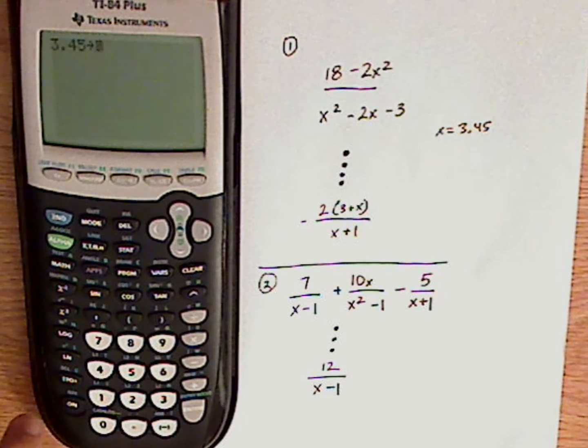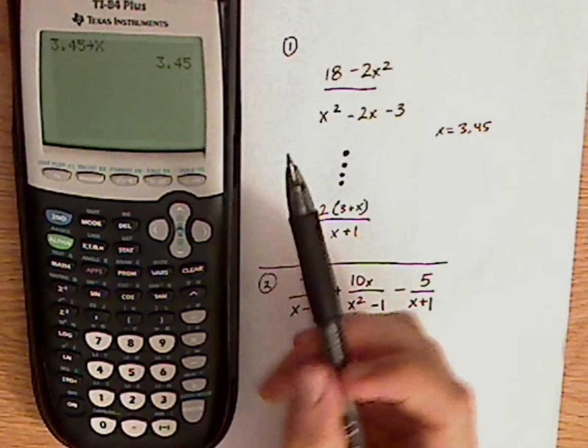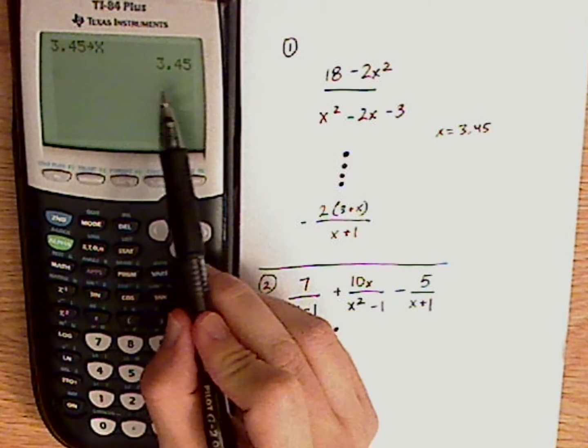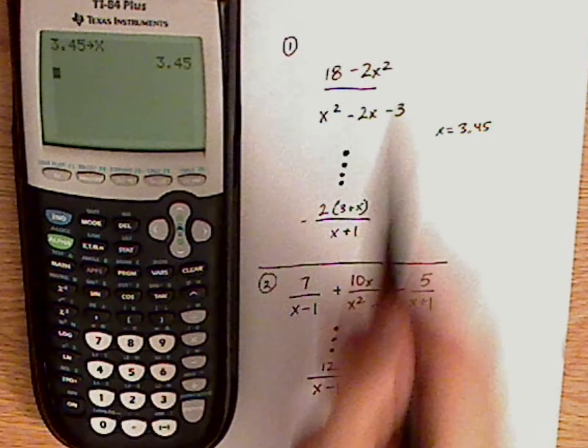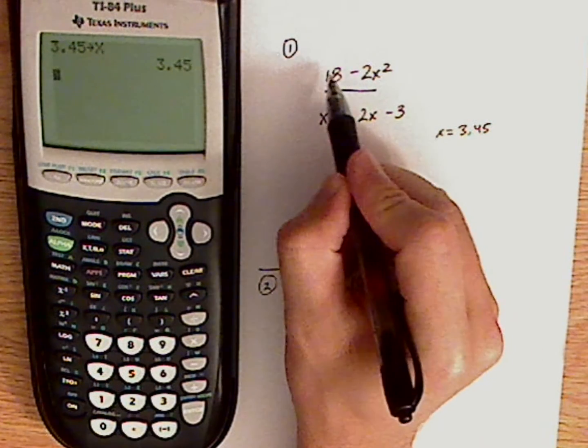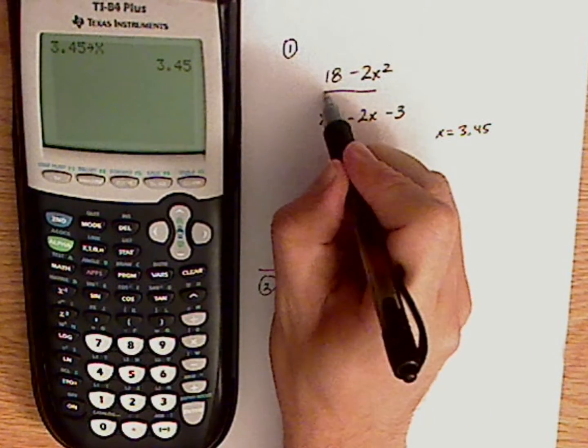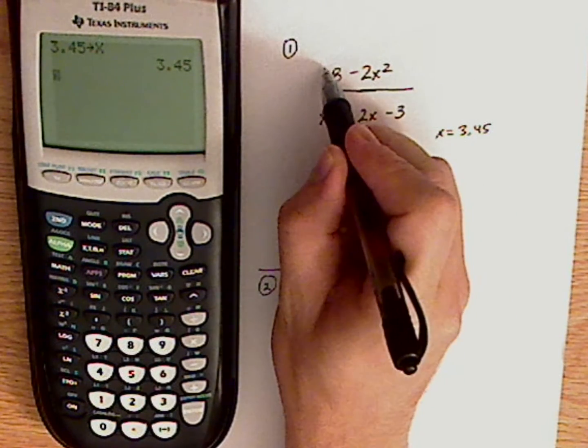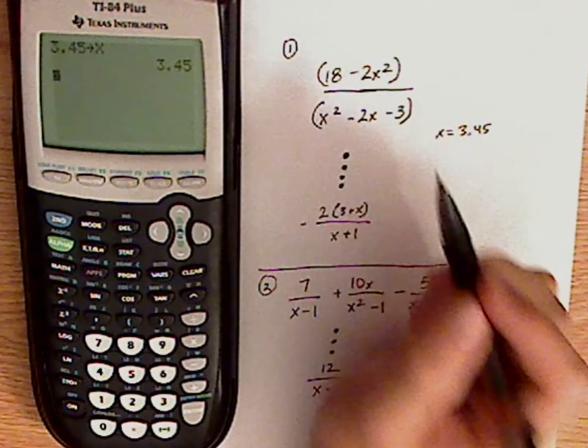Store it as x, and notice I push the variable key for x. Now wherever I type in x, it's going to replace with 3.45. So I'm going to type in this first. Whenever you type in numerators and denominators like this, since the calculator thinks linearly, you have to put parentheses around your numerator and around your denominator.